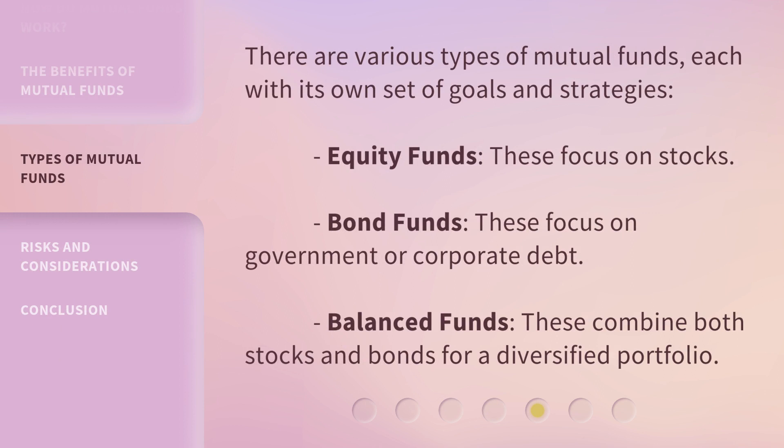There are various types of mutual funds, each with its own set of goals and strategies. Equity Funds focus on stocks. Bond Funds focus on government or corporate debt. Balanced Funds combine both stocks and bonds for a diversified portfolio.